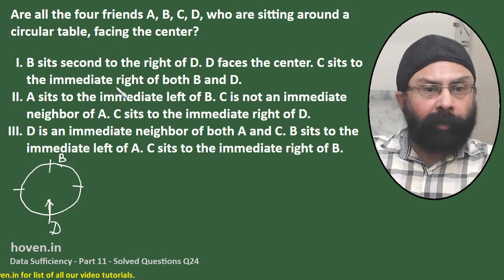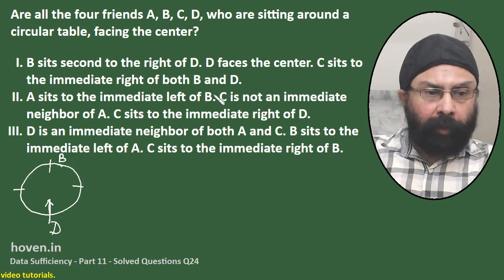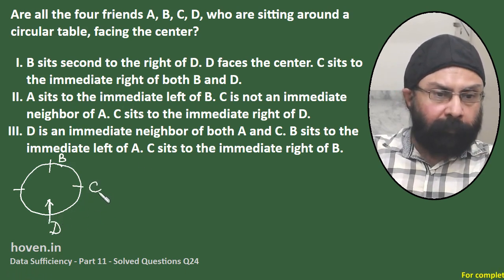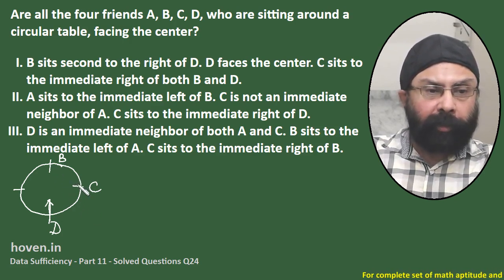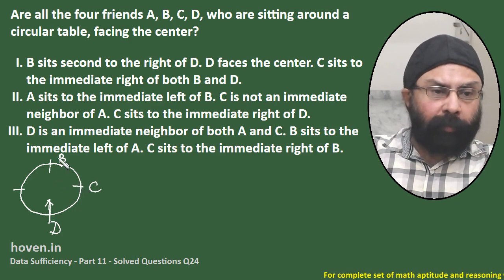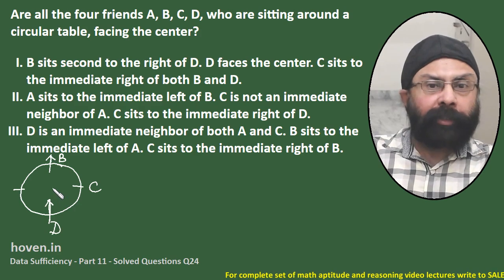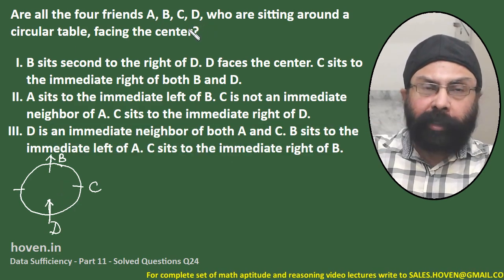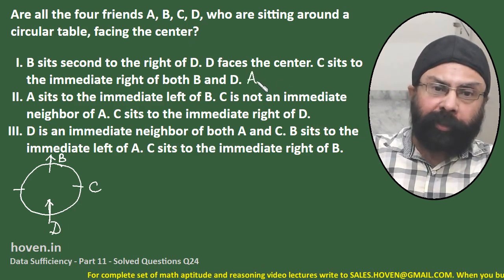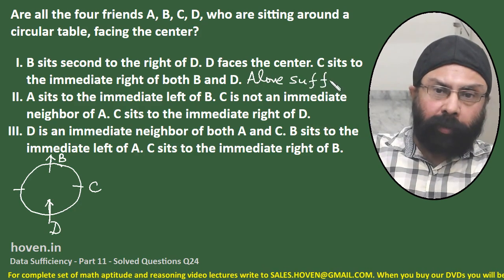C sits to the immediate right of both B and D. The immediate right of D is one position. But if C has to also be on the immediate right of B, then B must obviously be facing outside. So we can say that all four friends A, B, C, D are not facing the center. Statement 1 alone is sufficient.